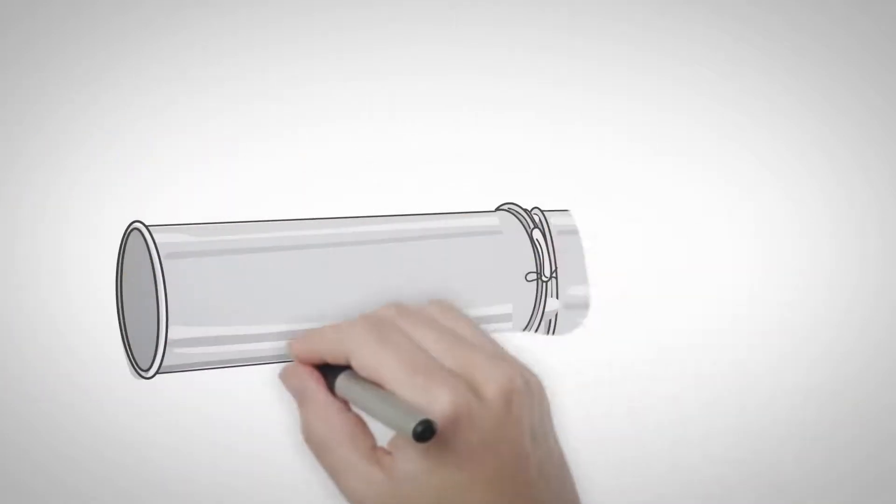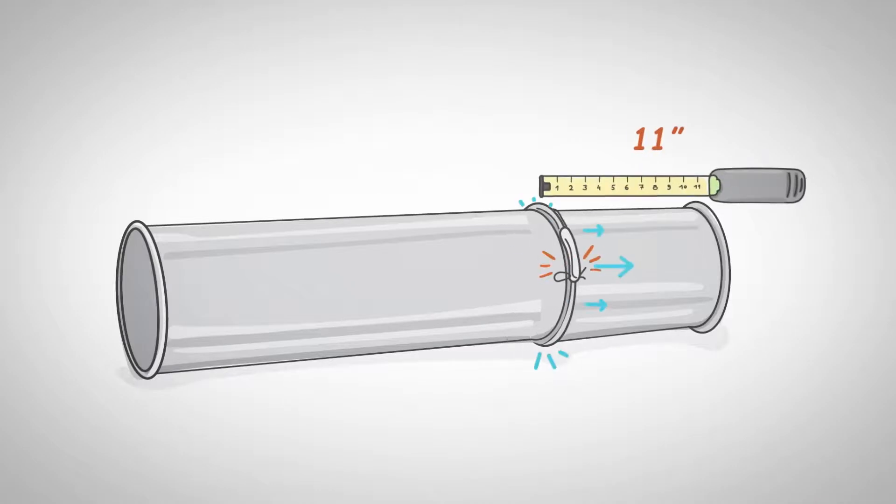You can be off several inches in your cut and still have the right length by utilizing KB Duct's adjustable sleeve for infinite adjustability.